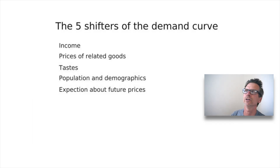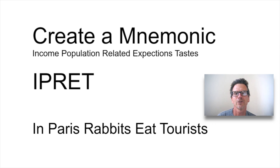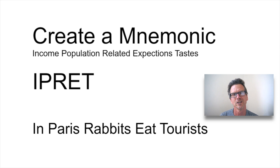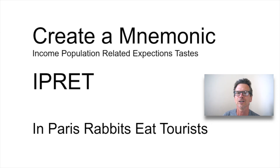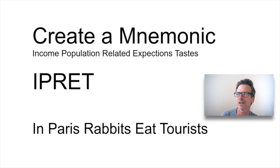So what are the five shifters? Income, prices of related goods, tastes, population and demographics, and expectations about the future. How are you going to remember this for the exam? Create a mnemonic — an ancient memory trick. The Ancient Greeks didn't have the internet or cell phones; they had to use their brain and created long sagas remembered by heart, because language and memory are largely activities of association. The trick: Income, Population, Related, Expectations, Taste — I-P-R-E-T.